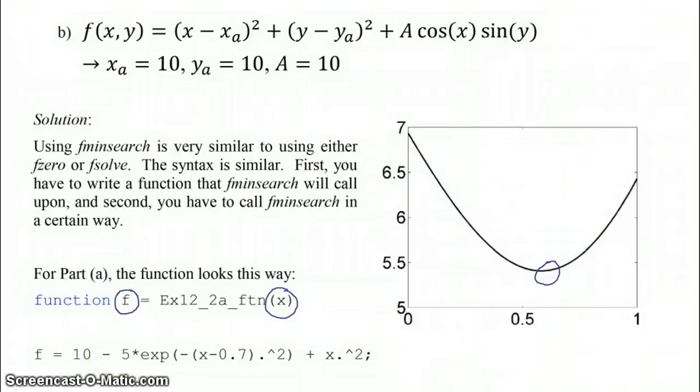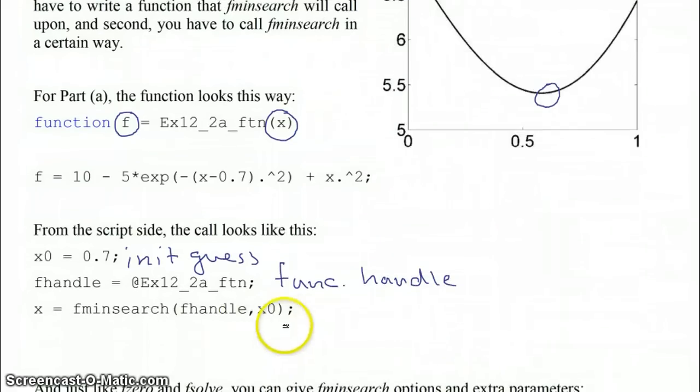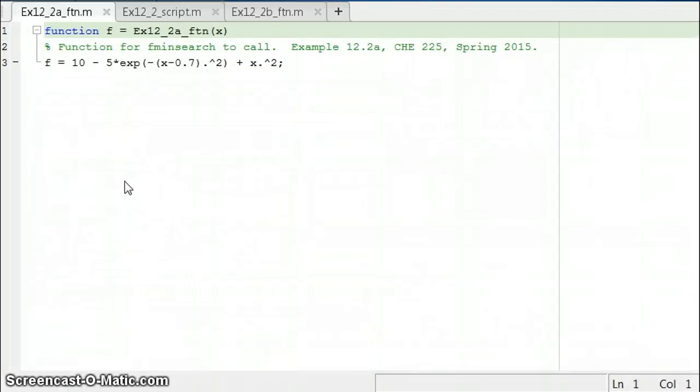If we're going to call fminsearch from, say, a script, the call looks like this, so we get an initial guess, followed by a function handle, and then we have the call to fminsearch. Note, of course, that fminsearch does expect the function handle and initial guess as the two inputs. From the MATLAB side, the way this is going to look is here's what our function looks like, and here's what our script looks like.